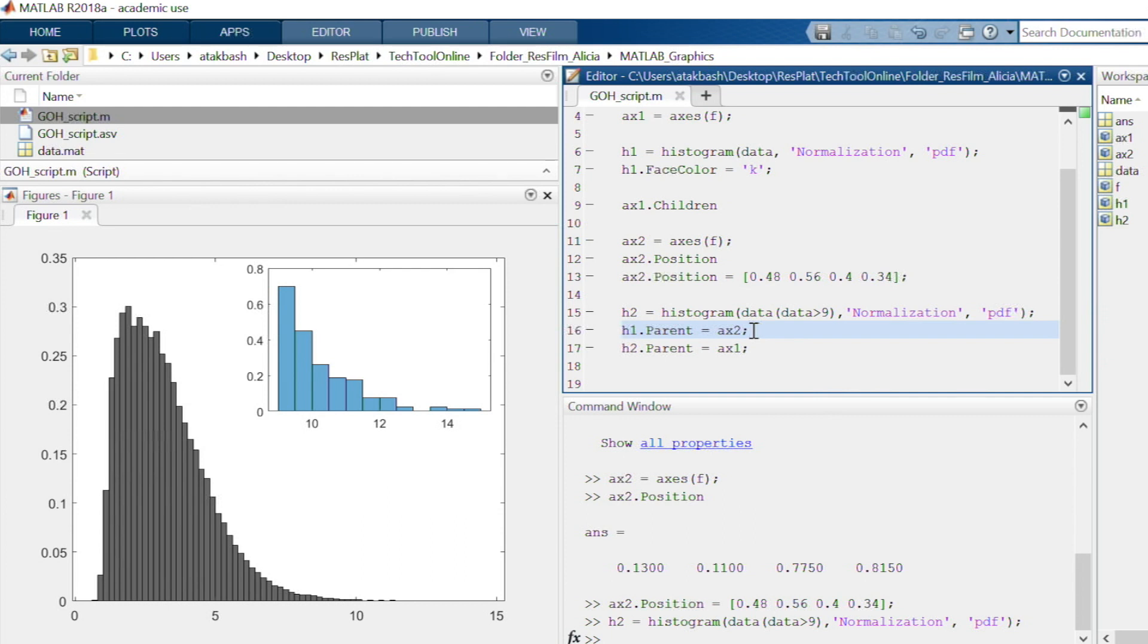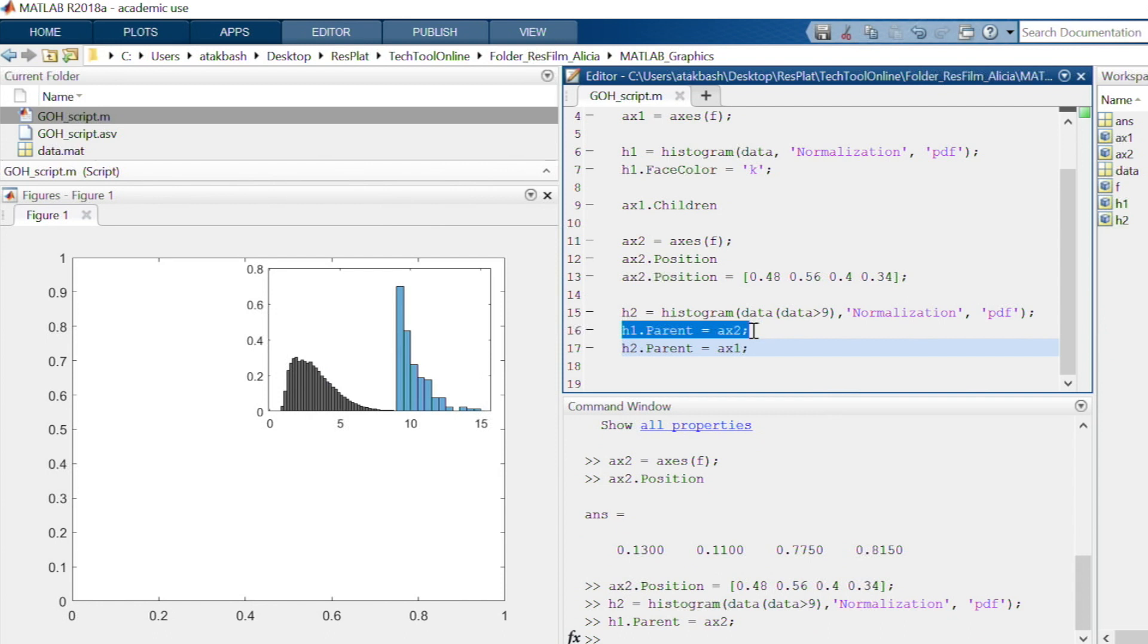So, I just need to switch the parent of the plot to get what I want. It goes like this. I access the parent of the first plot which is x1 and set it to x2. Now, we have both plots on x2. After I access the parent of the second plot which is x2 and set it to x1.